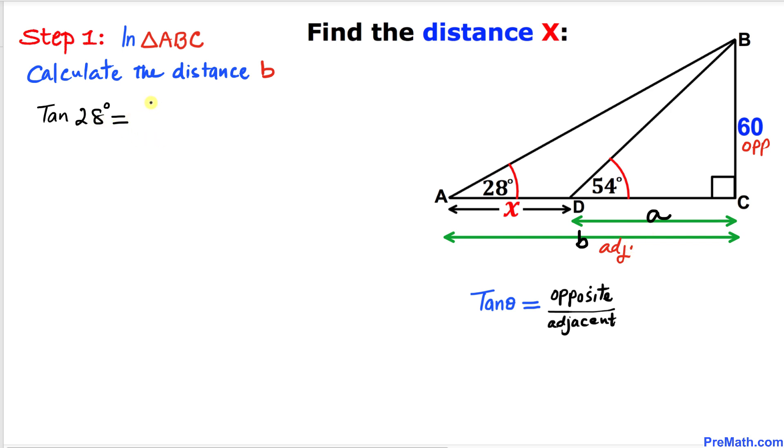Therefore, tangent of 28 degrees is 60 divided by b. If we use the calculator, tangent of 28 degrees is 0.532 equals 60 divided by b. Let me show you an easy way to evaluate for b. We can switch these two numbers, so I can write b equals 60 divided by 0.532. Thus, our b value turns out to be 112.844 units.